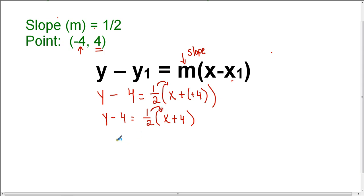So we're going to go ahead and distribute. So on the left, we still have y minus 4, and this becomes 1 half x plus 1 half times 4 is 2.